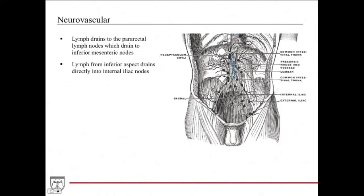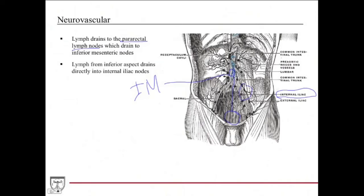There are two different lymph drainage systems for the rectum. It can drain to the pararectal lymph nodes, which are just proximal to the rectum, and those drain through vessels up to the inferior mesenteric lymph nodes. Lymph from the inferior aspect of the rectum can also drain directly into the internal iliac nodes.